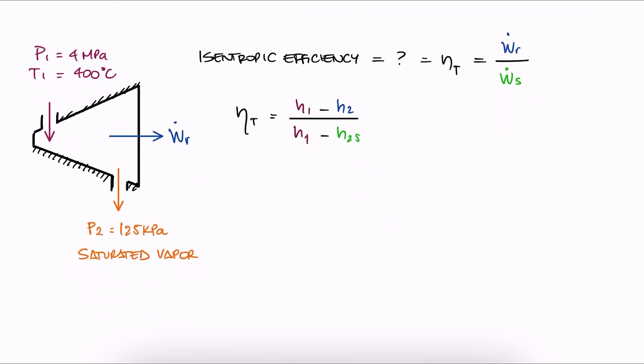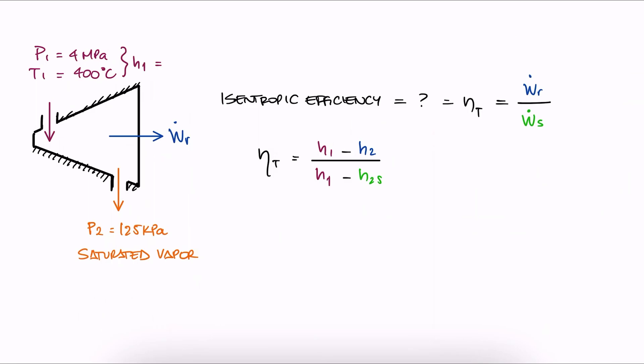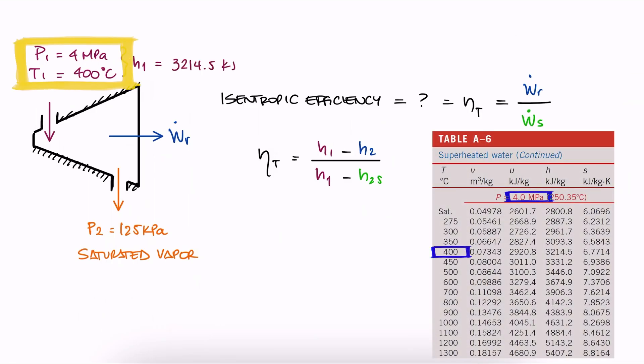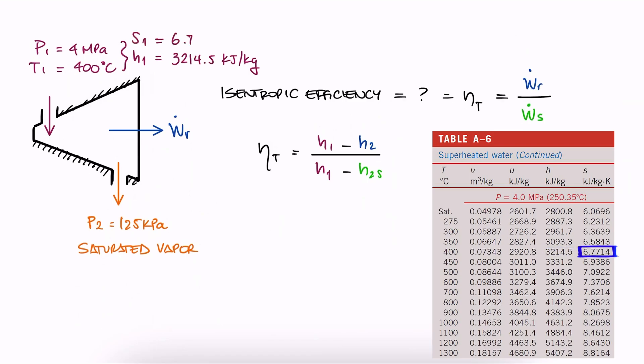h1 we can find from the given pressure and temperature. From superheated tables, we find h1, and since we know we're going to compare this to an isentropic case where s1 is equal to s2, we write down s1 as well.